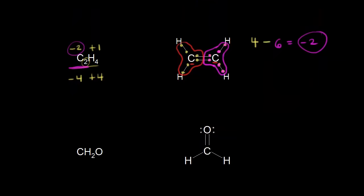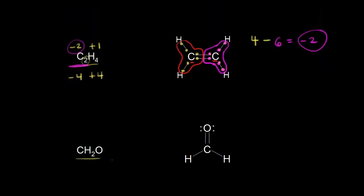Moving on to CH₂O, formaldehyde. Oxygen usually has an oxidation state of minus two, and we have one oxygen for a total of minus two. Hydrogen usually has an oxidation state of plus one, and we have two of them for plus two. This total has to sum to zero, so carbon should have an oxidation state of zero in this molecule. Looking at the dot structure with all bonding electrons filled in: carbon is more electronegative than hydrogen, so carbon takes those electrons. But oxygen is more electronegative than carbon, so oxygen takes all four electrons in that double bond — winner-takes-all.